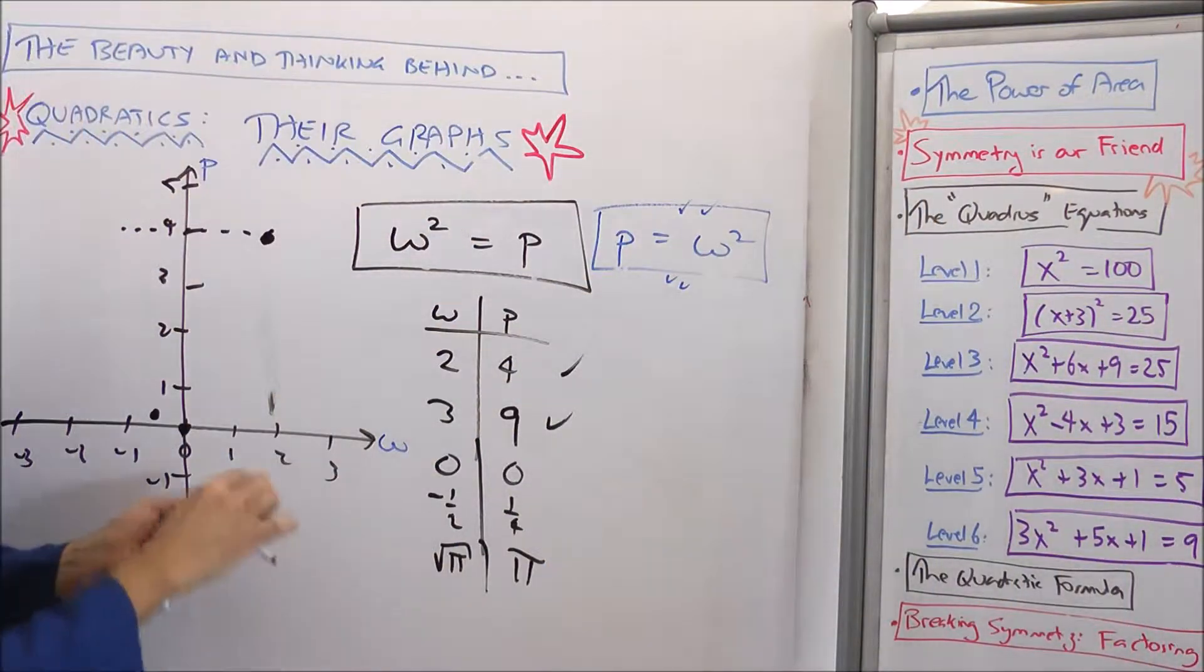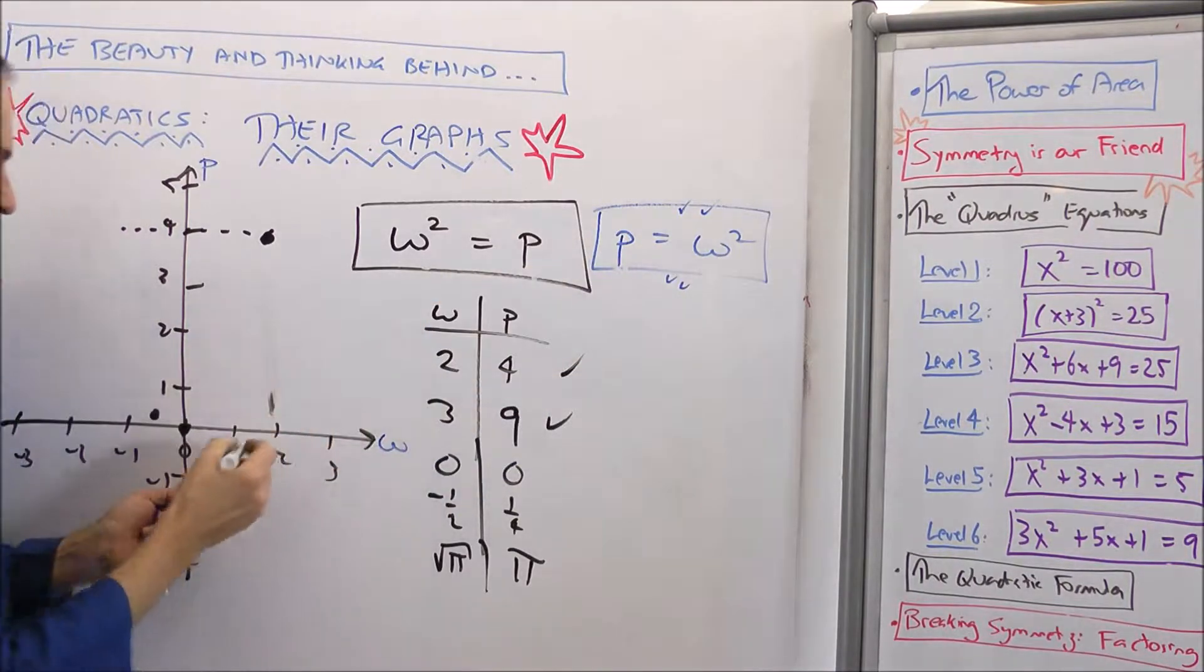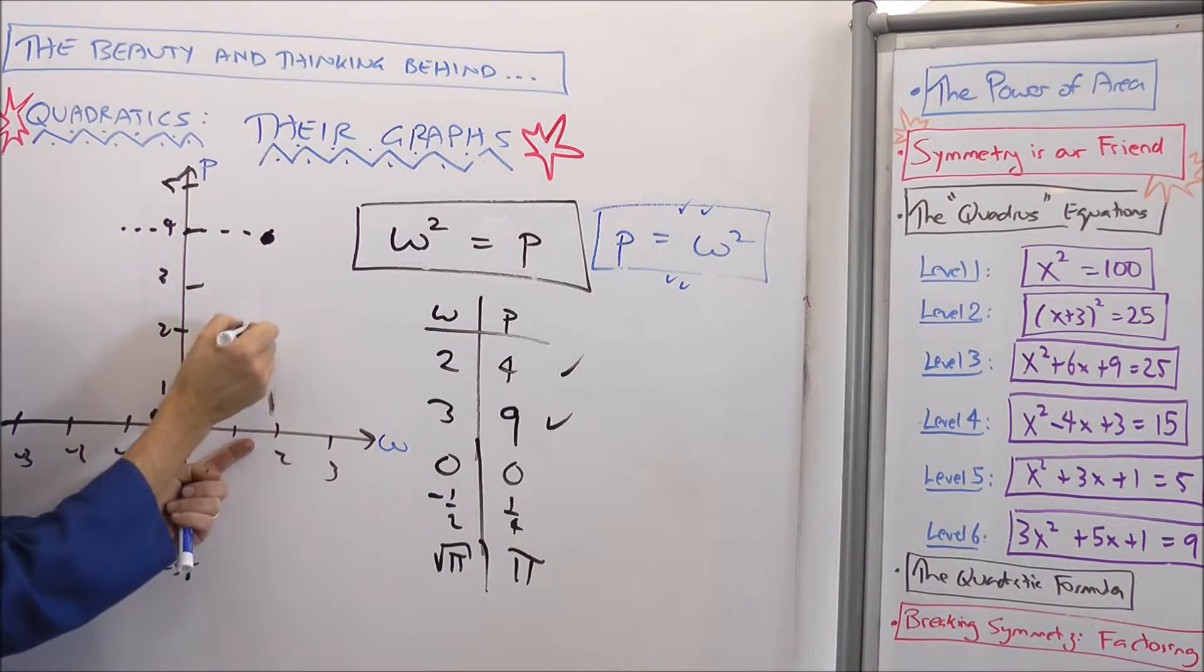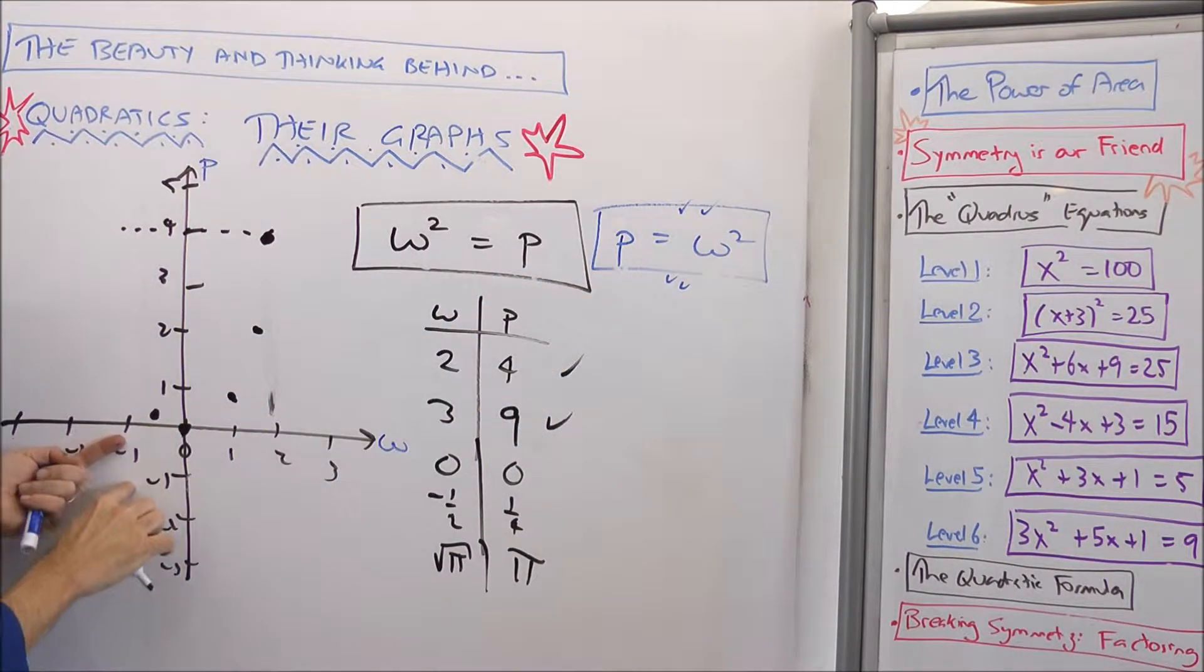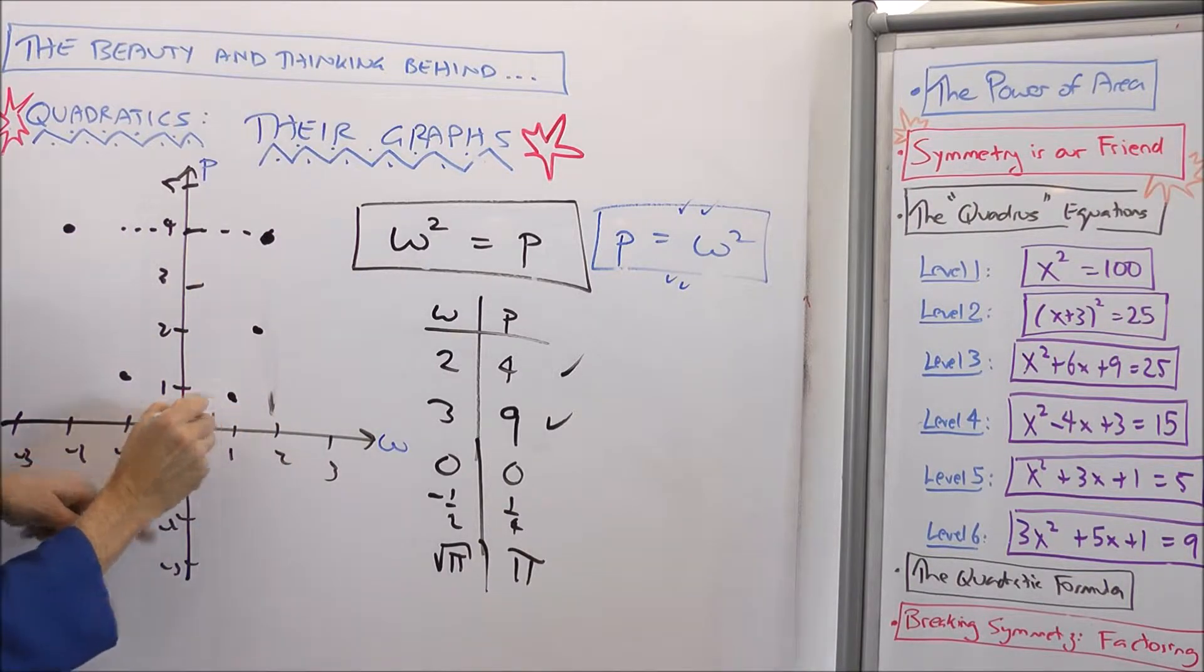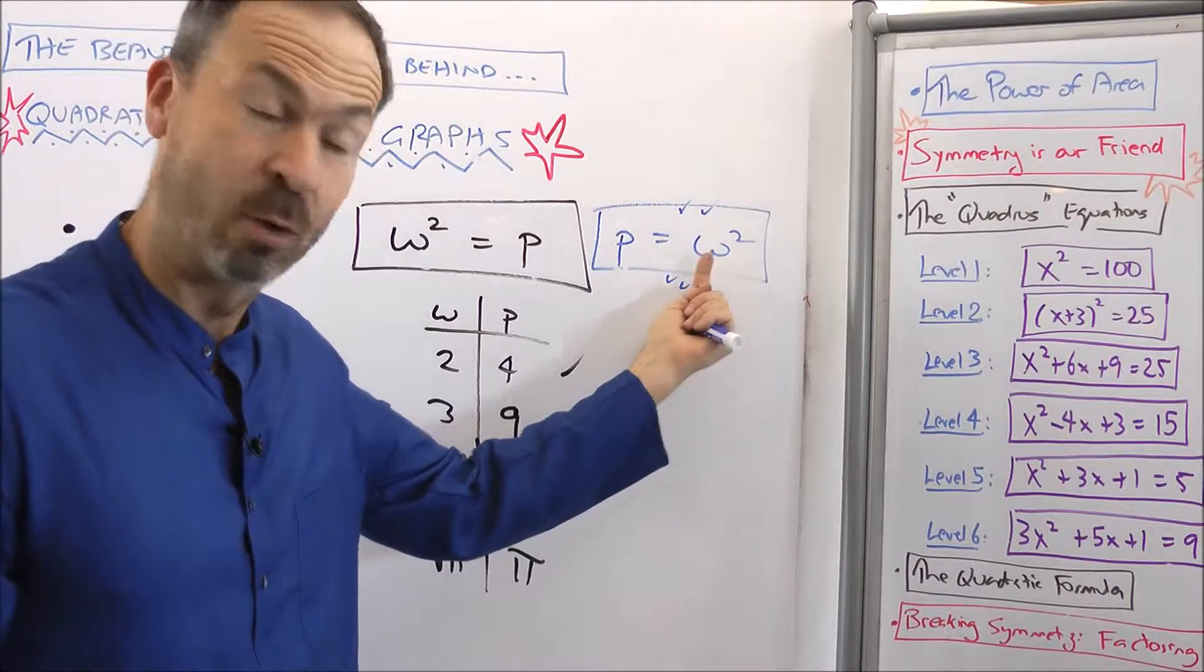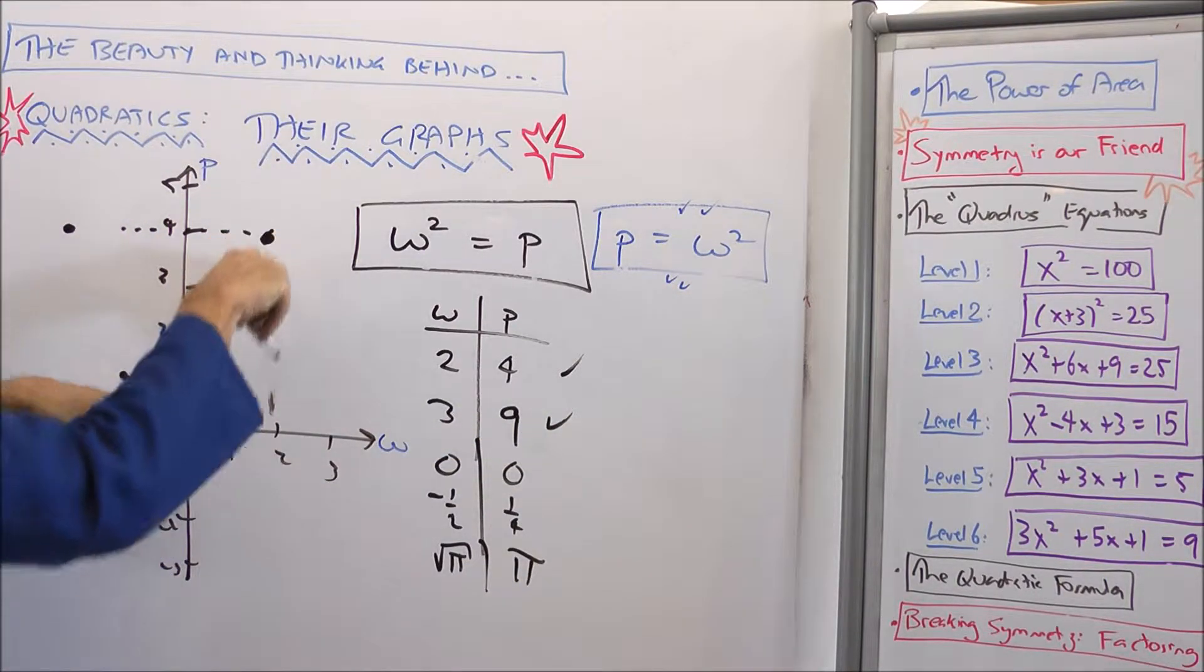In fact, I can go through and collect lots of data. When W is 1, it looks like P wants to be 1 squared, 1 high. When W is 2, it's 4. When W is 1 and a half, it's 2 and a quarter. When W is negative 1, P should be 1. When W is negative 2, P should be 4. I can kind of see it's matching on the left and the right because a negative number squared is the same as a positive number squared.